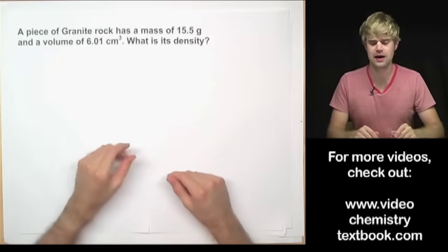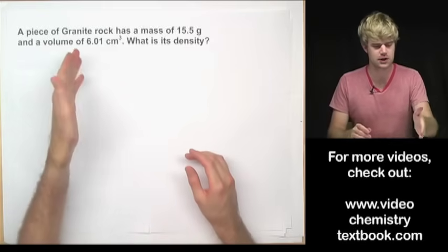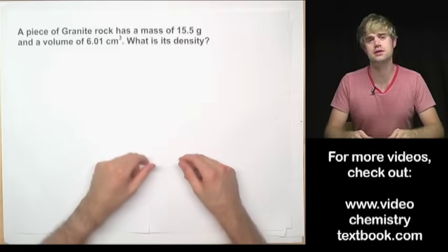A piece of granite rock has a mass of 15.5 grams and a volume of 6.01 cubic centimeters. What is its density?